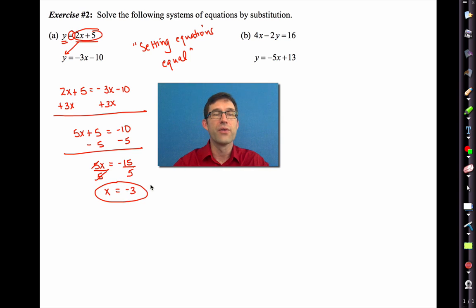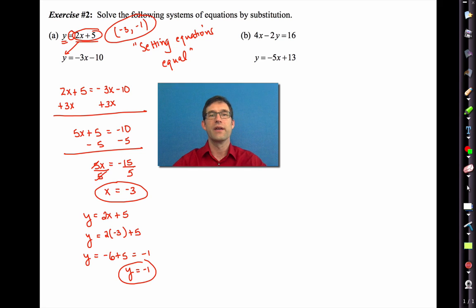I still need to get my y value, though. I can pick either two of these equations. It doesn't matter which one, but I'll go with the first one because it's just as easy as the second. And I'm going to put in negative 3 for x. Right? Now, I just have to evaluate. 2 times negative 3 is negative 6. Negative 6 plus 5 is negative 1. So y equals negative 1. It's completely okay to leave your solution that way, or you could write it as a coordinate pair. Just be careful to make sure to get the order right. Negative 3, negative 1.